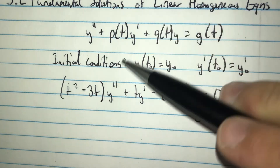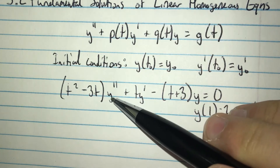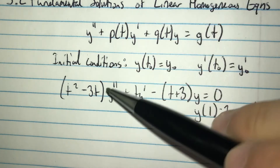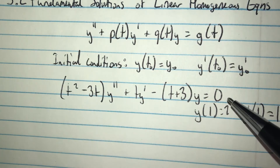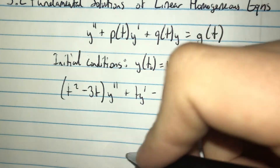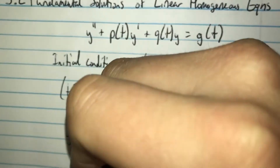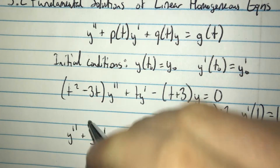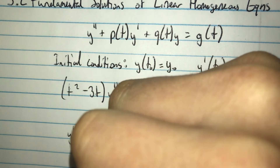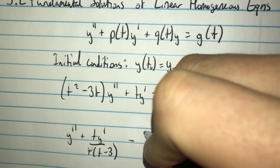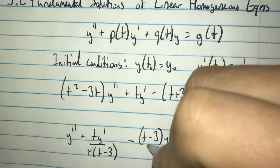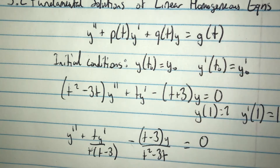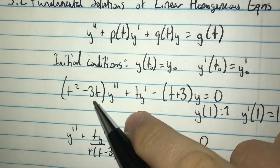We want the leading coefficient to be 1, so we divide through by t squared minus 3t. This gives us y double prime plus t times y prime over t times t minus 3, minus the quantity t minus 3 times y over t squared minus 3t, all equal to zero.